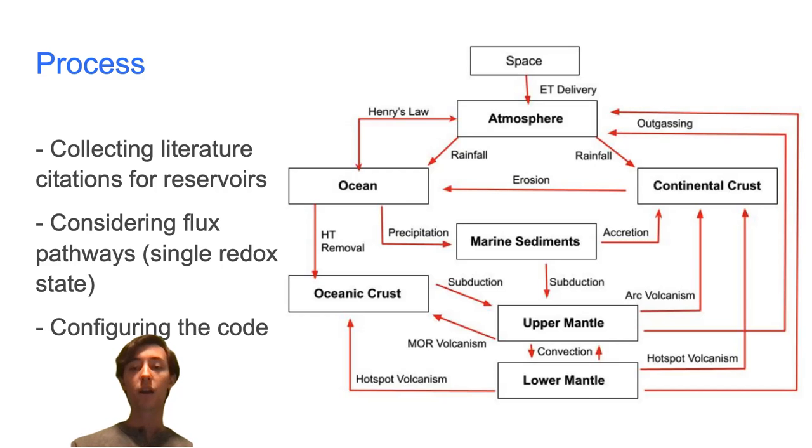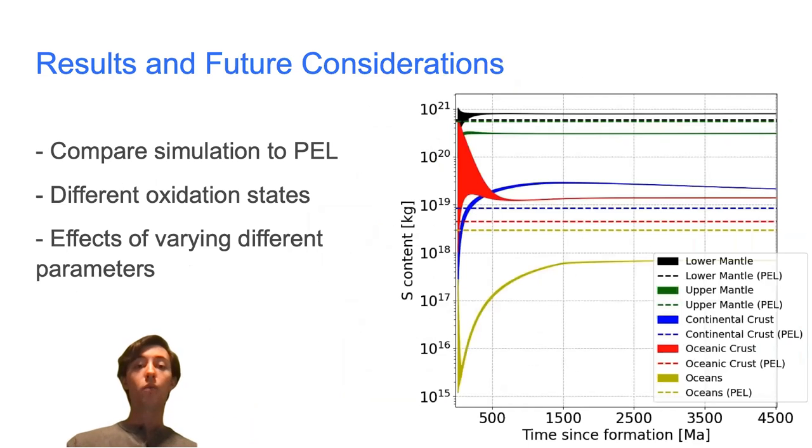These simulations outputted plots such as these, which show the evolution of different seedings converging over 4.5 billion years. You can see here that they can be compared to the present Earth level of reservoirs, the dotted lines, whose discrepancies account for the biotic processes that we ignored.